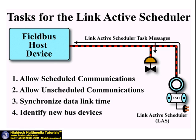Thus far, we have described the three basic types of communications that take place on a Fieldbus H1 segment and the role that the Link Active Scheduler, or LAS, plays in these communications. We've also indicated that the LAS has other responsibilities for data link maintenance as well. This may have left you a little foggy on just what these responsibilities are and how and when they are carried out. This information is presented here and includes a logic flow diagram used by the Link Active Scheduler as it executes its scheduling algorithm.